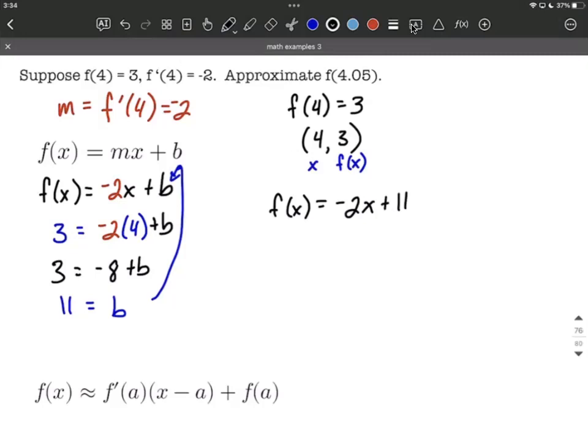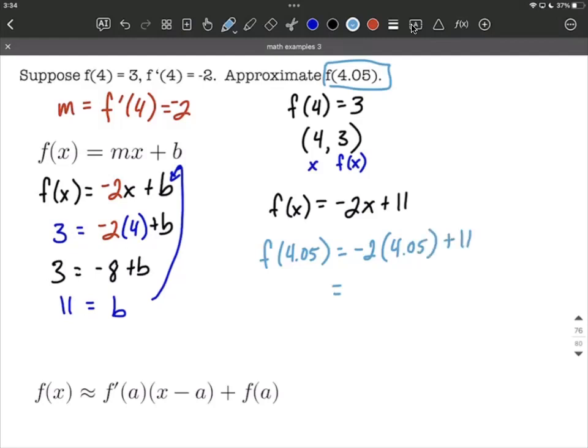We want to eventually try to use that to estimate f of 4.05. So what we'll do is plug in 4.05 in for our x. That's an x value. It's going to be negative 2 times 4.05 plus 11, or negative 8.10 plus 11. It's going to be approximately 2.9.